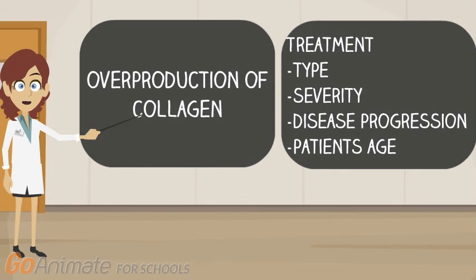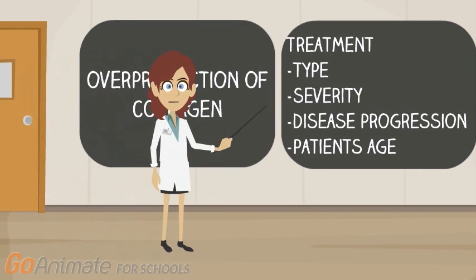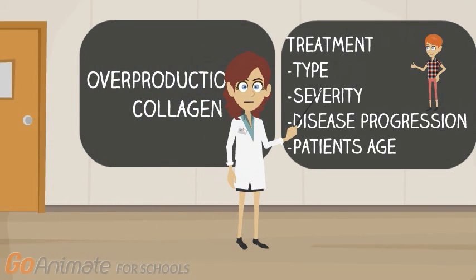A key point that was previously mentioned is that scleroderma is the result of the overproduction of collagen, which can affect those afflicted in different ways. This requires the treatment to be very personalized to the individual and must take into account factors such as type, severity, disease progression, and patient's age.